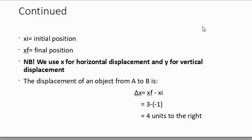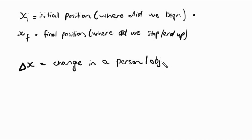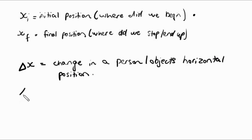We use the letter or variable X for horizontal displacement and Y for vertical displacement. Because displacement is a change in position, we use the Greek variable delta. So delta X is the change in a person or object's horizontal position, and delta Y is the change in a person or object's vertical position. That is the only difference.